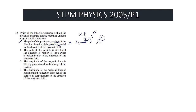Statement B: The path of the particle is circular if the direction of motion of the particle is perpendicular to the direction of the magnetic field. This is correct because of the word 'perpendicular.' The force is given by BQv, and this balances out with the centripetal force mv²/r. So the path will be circular.